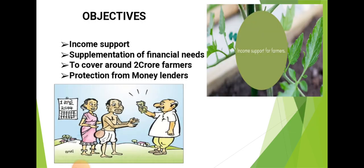The core objectives of this scheme are to provide income support to all eligible land-holding farmers and their families, to supplement the financial needs of the farmers in procuring various inputs to ensure proper crop health and appropriate yields, and to augment the farmers' income. The scheme also aims to cover around 2 crore farmers with an estimated expenditure of 87,217 crores, and to protect them from money lenders who charge high rates of interest.